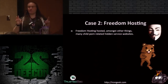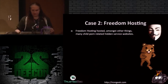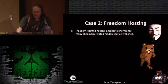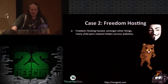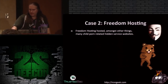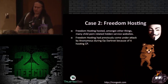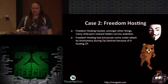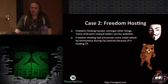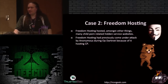Case two: Freedom Hosting — a company that provided hidden service hosting inside Tor. They hosted various things, including some child pornography-related services, as well as legitimate services like TorMail. Anonymous had previously run an operation called OpDarknet attacking them and dumping user information — because just being on an anonymous network doesn't mean the web application is safe from vulnerabilities. That's how accounts were dumped from them.